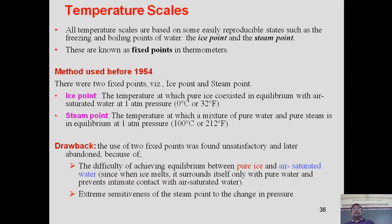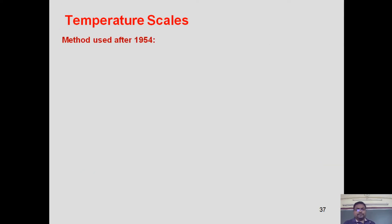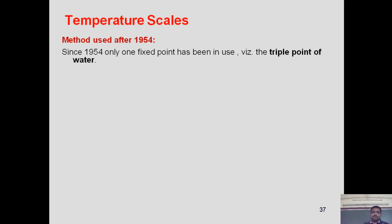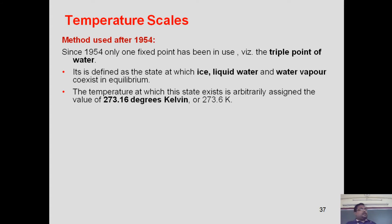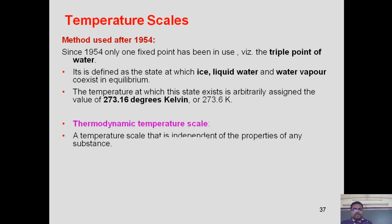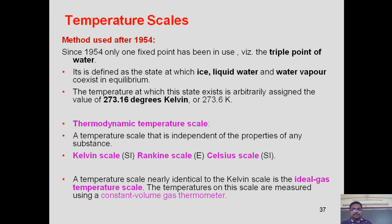Instead of using two fixed points, a single fixed point method was later invented called the triple point of water, used since 1954. The triple point is defined as the state at which all three phases — ice, liquid water, and water vapor — coexist in equilibrium. The temperature assigned to this triple point is 273.16 Kelvin. A temperature scale that is independent of the property of any substance is called a thermodynamic temperature scale.